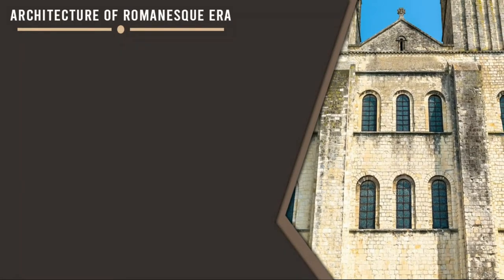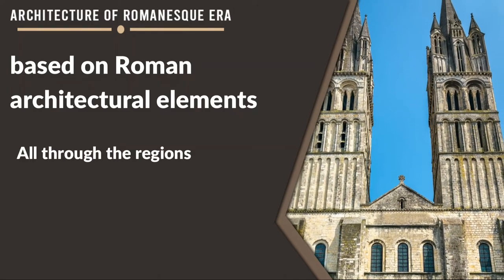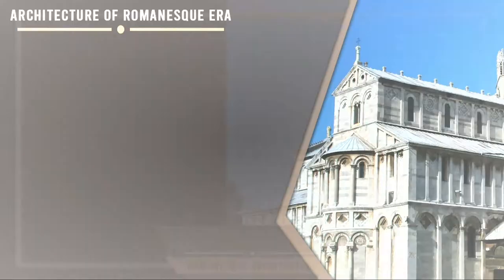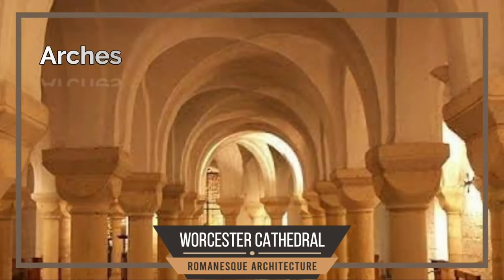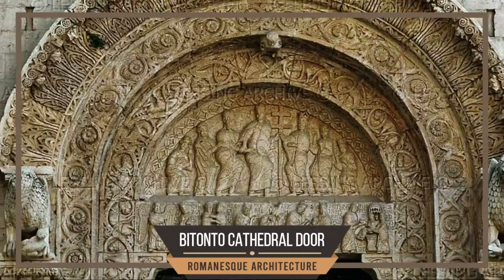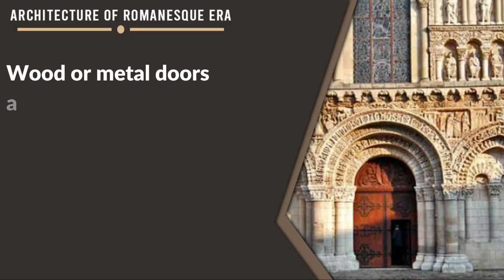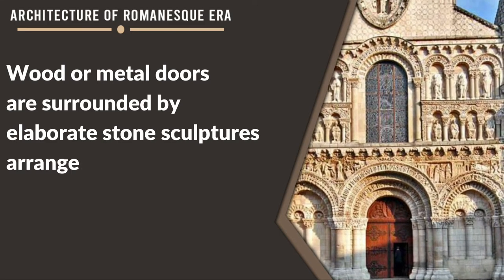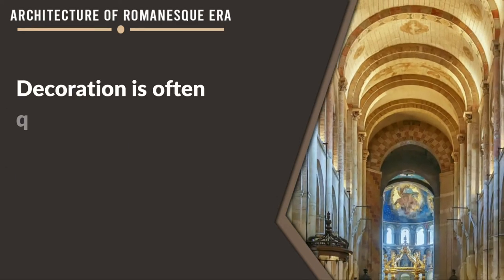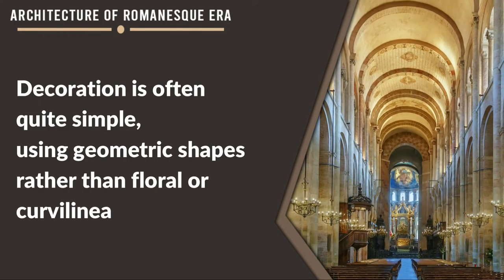Romanesque architecture is based on Roman architectural elements. Throughout the regions that were part of the ancient Roman Empire are ruins of Roman aqueducts and buildings, most of them exhibiting arches as part of the architecture. The doorways of Romanesque churches are often grand sculptured portals. Wood or metal doors are surrounded by elaborate stone sculptures arranged in zones to fit architectural elements. The decoration is often quite simple, using geometric shapes rather than floral or curvilinear patterns.